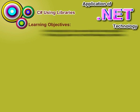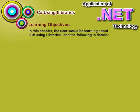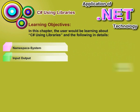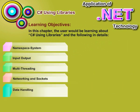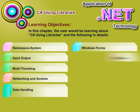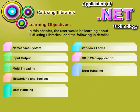Learning Objectives. In this chapter, the user would be learning about C-Sharp using libraries and the following in detail: Namespace System, Input-Output, Multithreading, Networking and Sockets, Data Handling, Windows Forms, C-Sharp in Web Application, and Error Handling.